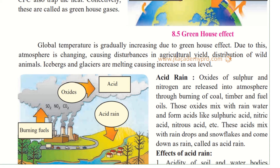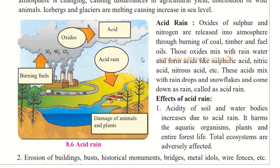Due to this rise in global temperature, the atmosphere is changing, causing disturbance in agricultural yield, distribution of wild animals — which are moving away from heat zones or dying because they cannot survive the new environment — and melting of icebergs and glaciers. Icebergs are ice in the sea and glaciers are snow collected on land. Their melting is causing the sea level to rise.